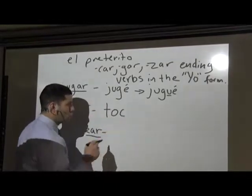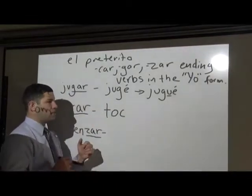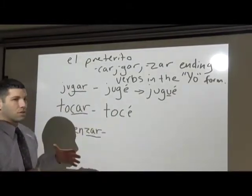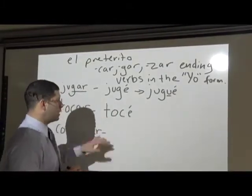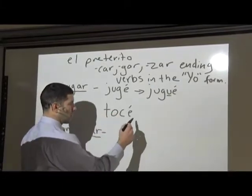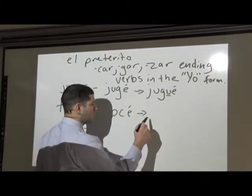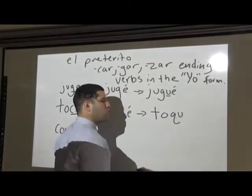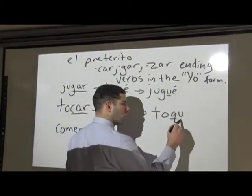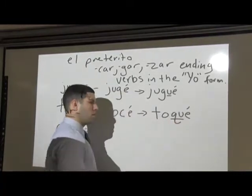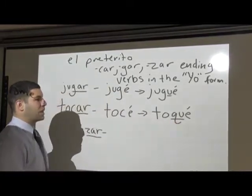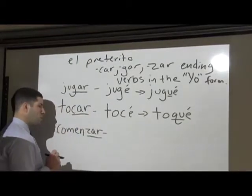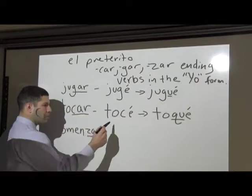For tocar, same thing applies. If I take my stem tok — that's a hard C — but as soon as I add É, it changes the pronunciation to tocé, and that's no good. We need the hard C again, only in the yo form with CAR verbs. So what we have to do is change that C to QU, giving us toqué — I played, or I touched. So C changes to QU.